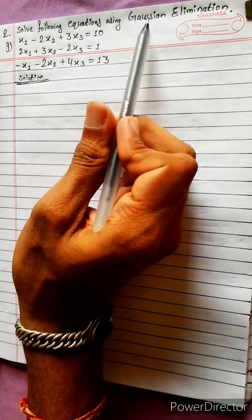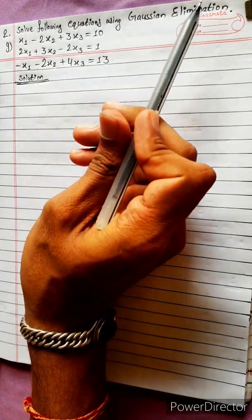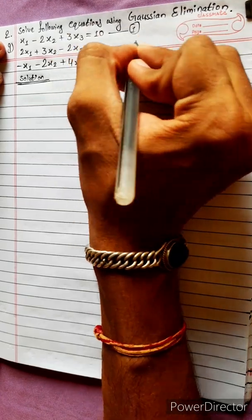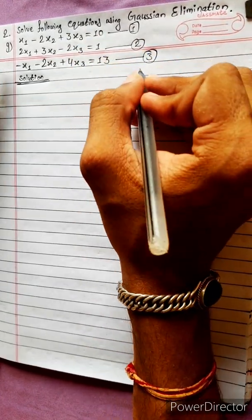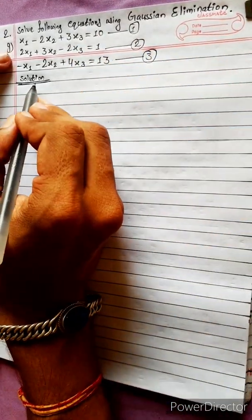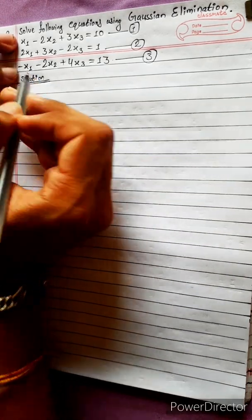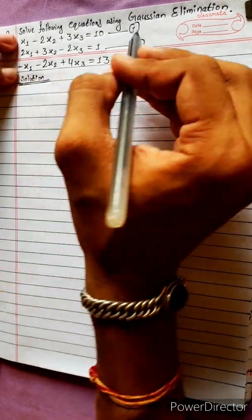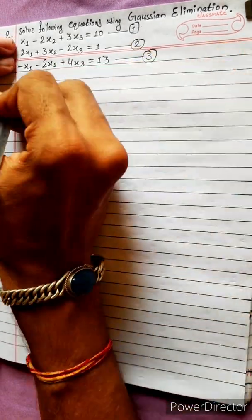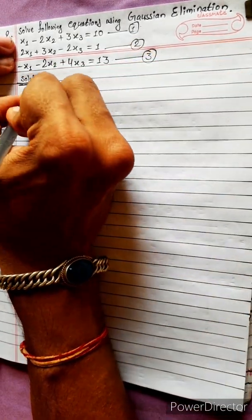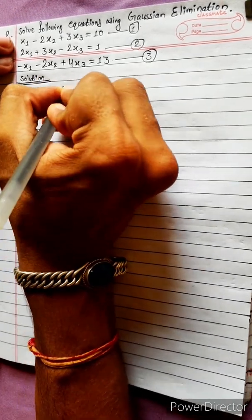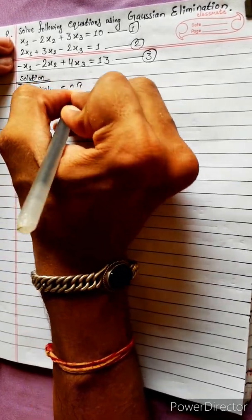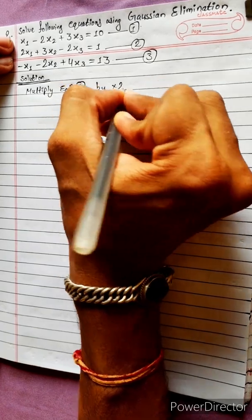Solve the following system of equations using the Gaussian elimination method. This is equation 1, equation 2, equation 3. Now, to solve equations 1 and 2 first, we multiply equation 1 by 2.